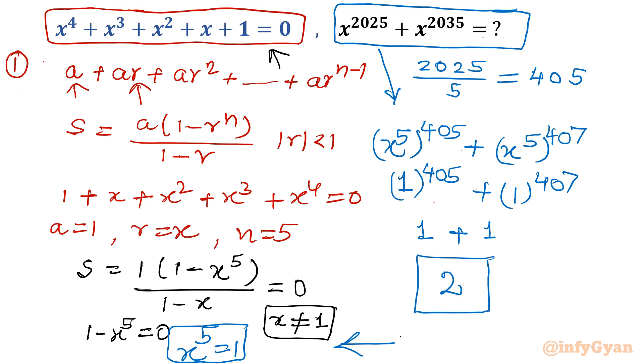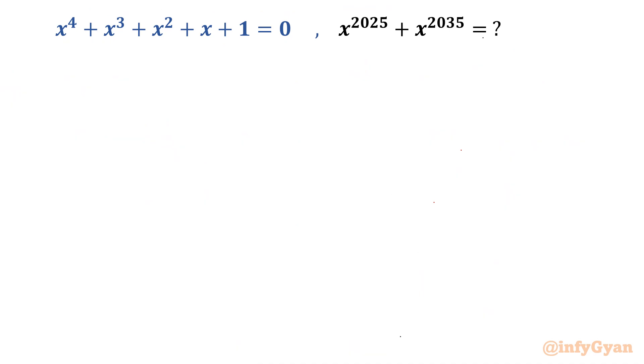This method is called using GP, geometric progression. Now let's take up the second method. Second method is a simple one which we used to attempt earlier also. I am going to multiply x minus 1 in LHS and RHS both.